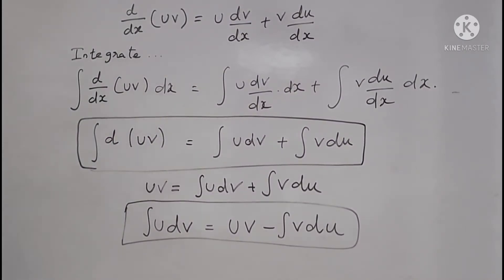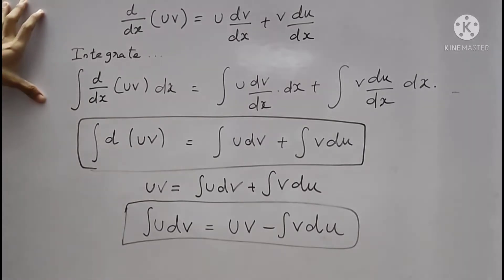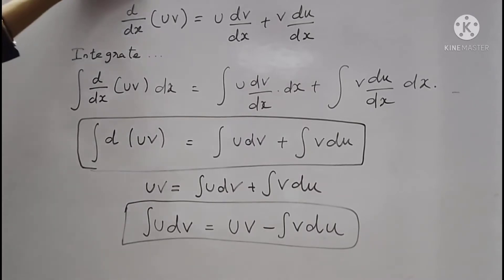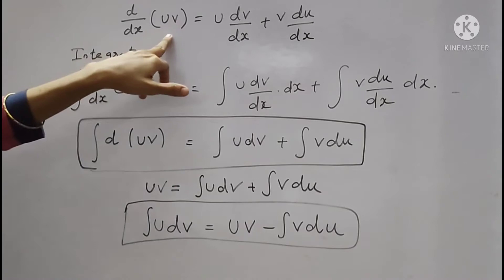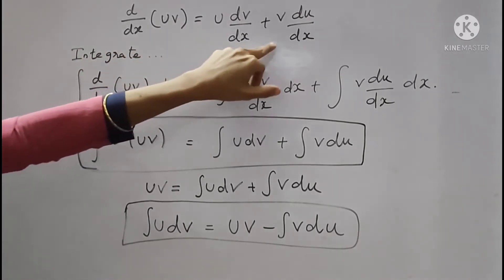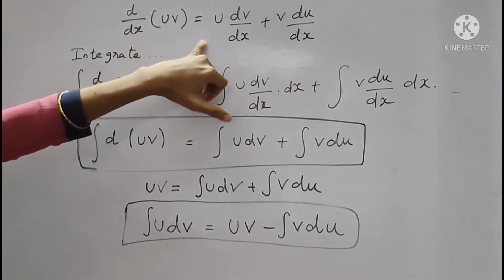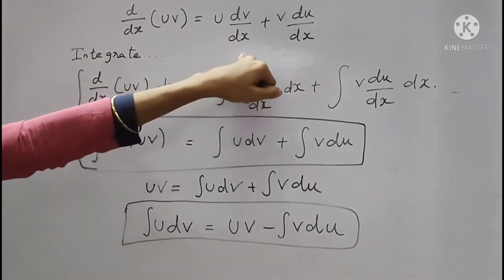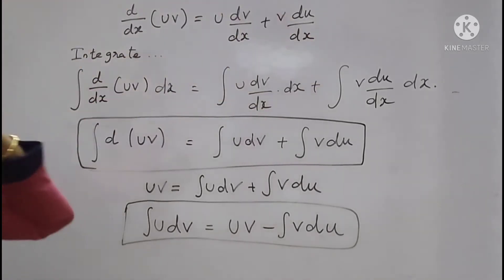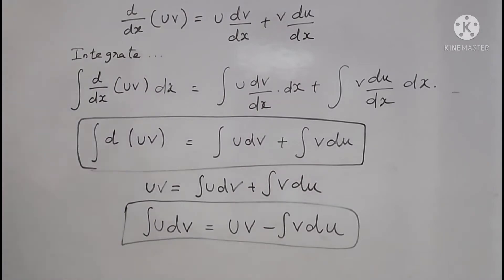This integral is example 2.25 and there is a formula that has to be explained. Like first differentiation, we normally do the uv method of differentiation. How do we do it? uv dash plus v u dash, which means differentiate d/dx of uv is equal to u·dv/dx plus v·du/dx. That is the uv dash plus v u dash formula.